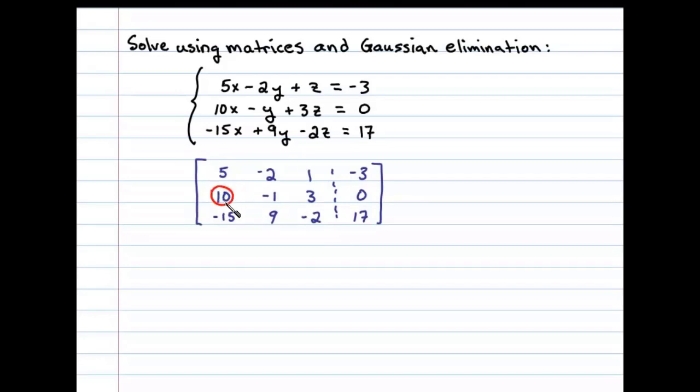To replace this first element of the second row with a zero, let's multiply the first row by negative 2. That'll leave us with -10, 4, -2, and 6. Now we'll rewrite the second row underneath that and then add them together. That'll result in 0, 3, 1, and 6.